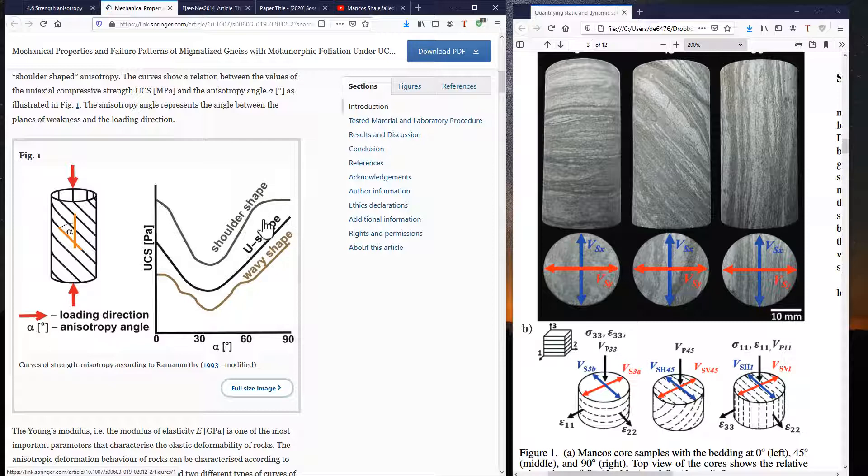The same thing that we're saying now for unconfined compression strength also applies to tensile strength. It's usually easier to fracture a rock in the plane of the interfaces, and that would mean with the tension perpendicular to the interface, than if the fracture would have to go through each of these layers. We're going to see an example about that in just a bit.